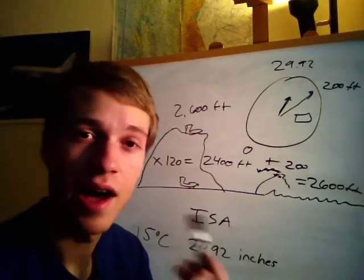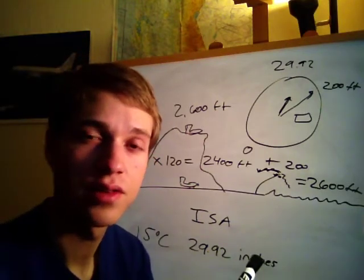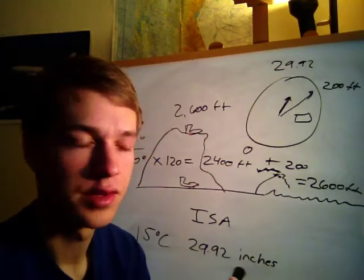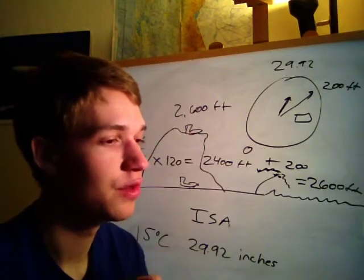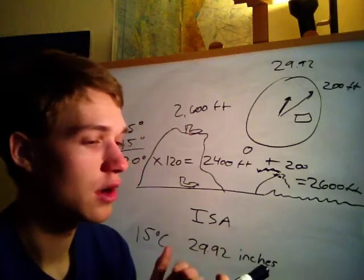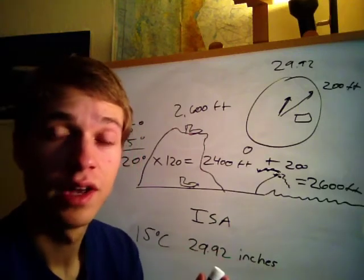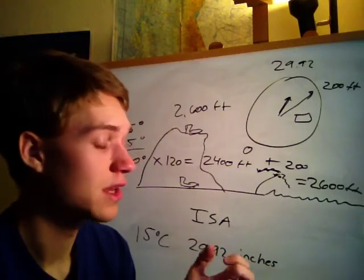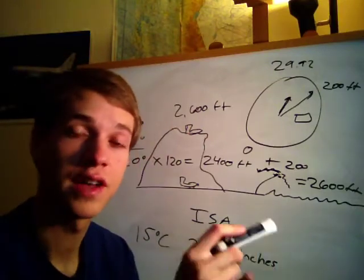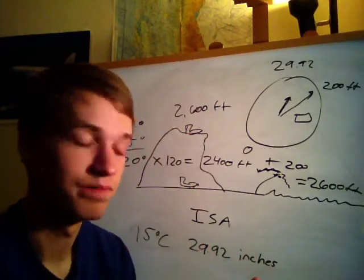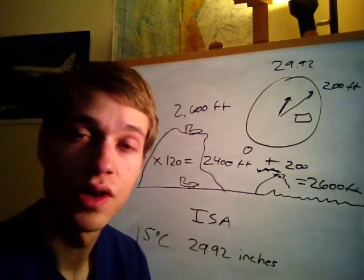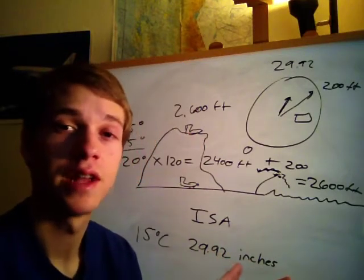One interesting side point: if you have a high density altitude, even though the airplane isn't performing at its best, it's actually going to fly through the air faster than your airspeed indicator shows, because the air is less dense and there's less drag. True airspeed increases with density altitude.